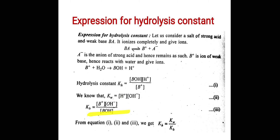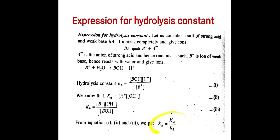KB equals the molar concentration of B⁺ times the molar concentration of OH⁻, divided by the molar concentration of BOH. This is the equilibrium constant for the base — this is equation 3. From equations 1, 2, and 3, we get KH equals KW divided by KB. So this is our hydrolysis constant.